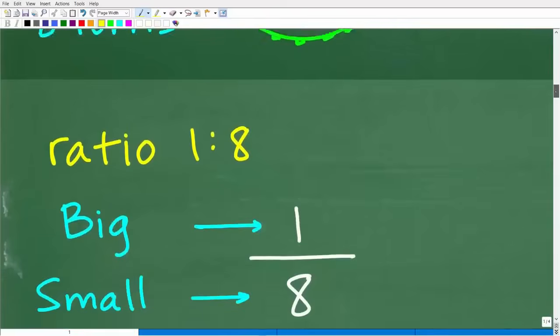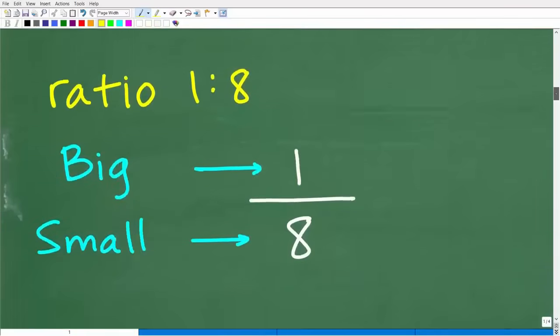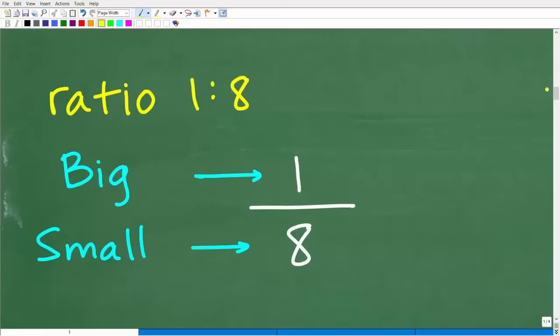So what do we do next? Well, what we want to do is actually kind of set up a ratio. Now you could do a one to eight or eight to one ratio. It doesn't make a big difference here. So I'm going to use one to eight. I think it's a little bit easier to see as a fraction versus eight to one, but really it doesn't make a difference.